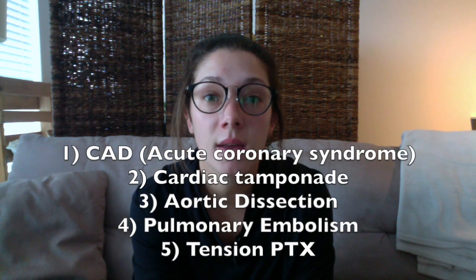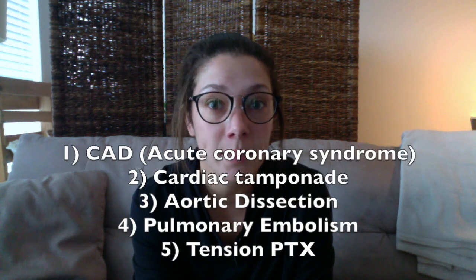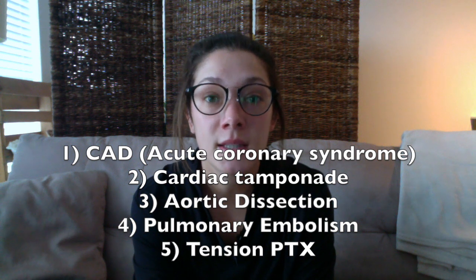So we've talked about two chest pains that involve the heart — coronary artery disease and cardiac tamponade — one that stems from the heart involving the aorta, two that involve the lung — tension pneumothorax and pulmonary embolism — and the last one involves the esophagus.